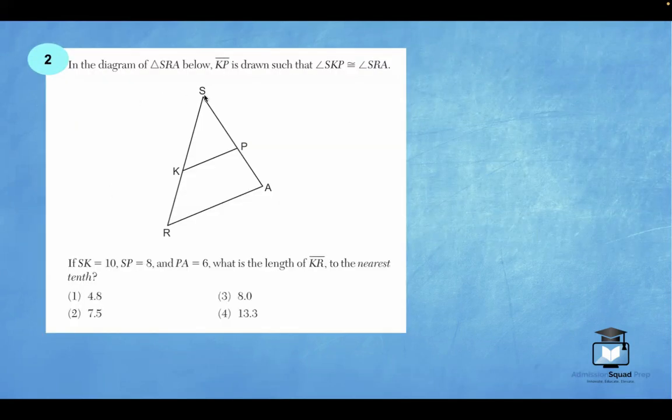Let's continue. Number two, in the diagram of triangle SRA below, line segment KP is drawn such that angle SKP, which is this angle right here, and angle SRA are congruent. We call these corresponding angles. We also know that angle S is congruent onto itself, and notice angle S is present in both of these triangles. So as of right now, since we can prove that two angles in both triangles are congruent, we can see that these two triangles are similar.